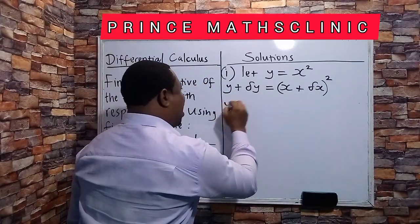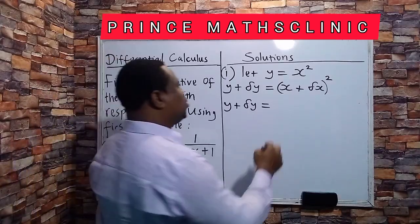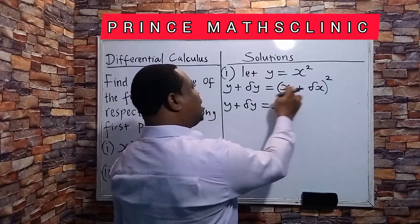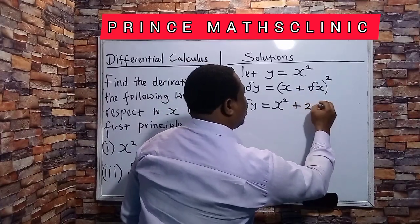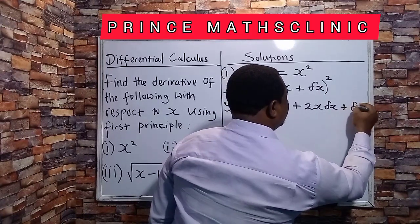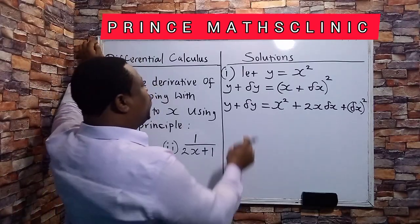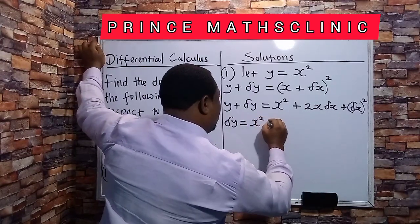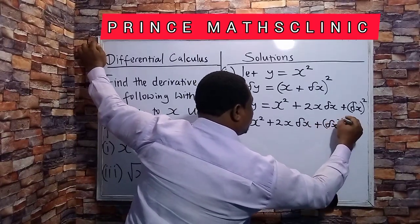Then the next thing to do is to say y plus dy. I want to expand this. Expanding this means I need to say x squared, then I take this to multiply this, that is x·dx — this x is different from this x — so x·dx, then multiply it by 2, then dx, then I will square this dx, so this becomes dx squared. So the next step I need to take is to move y to this side, so I will have dy equals x squared plus 2x·dx plus dx squared minus y.